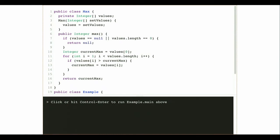Now let's talk about something else we can do with generic instantiation. I want to take this class Max and make it generic. This was an example from earlier in the semester — I've got a class that stores an array of integers and has a max function that goes over the array and finds the largest value. I'd like to be able to change this so I can run it on any Java object. What's the problem? How do I compare two arbitrary Java objects?